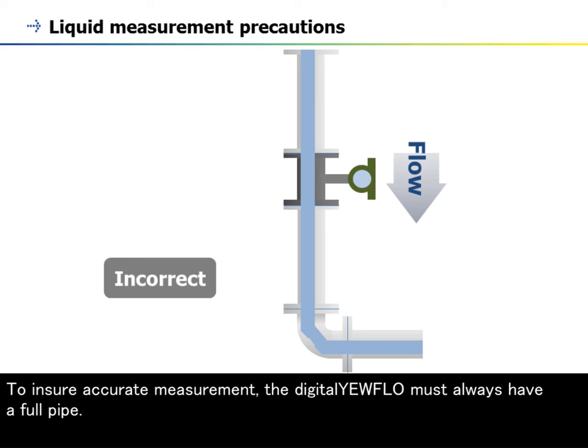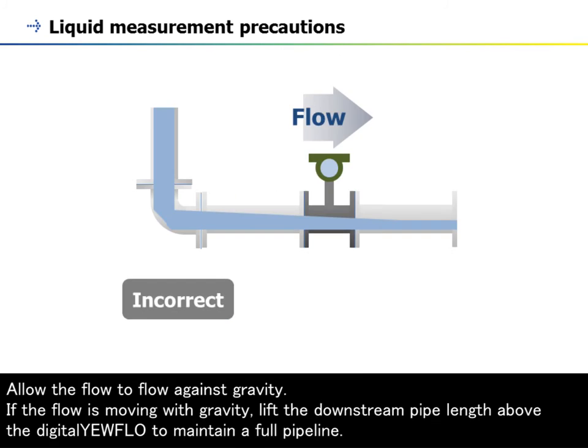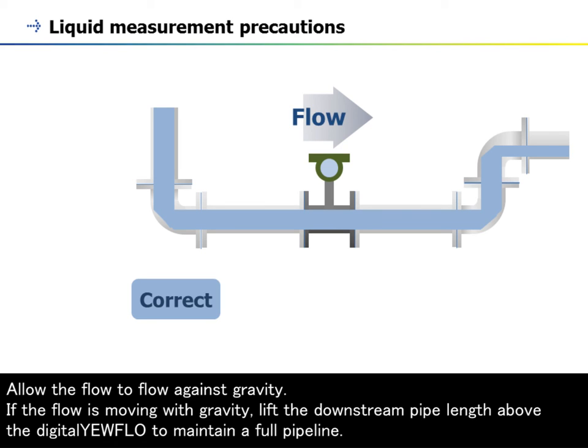To ensure accurate measurement, the digital yearflow must always have a full pipe. Allow the flow to flow against gravity. If the flow is moving with gravity, lift the downstream pipe length above the digital yearflow to maintain a full pipeline.